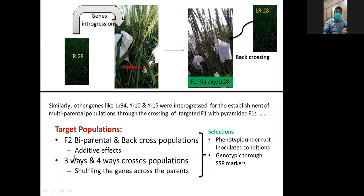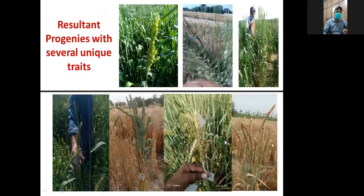The target populations were biparental and backcross populations. Similarly, for multi-parental populations, three-way and backcrosses were done. For phenotypic selection, artificial rust inoculation conditions were created. For genotypic selection, SSR markers were used.